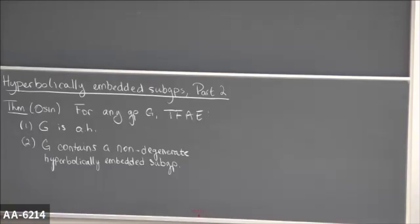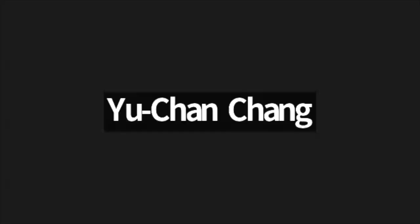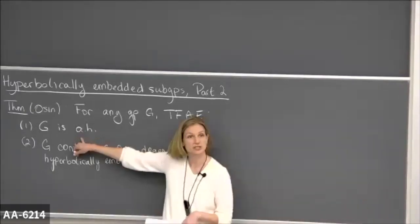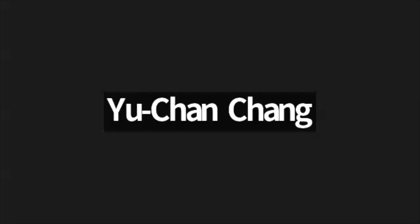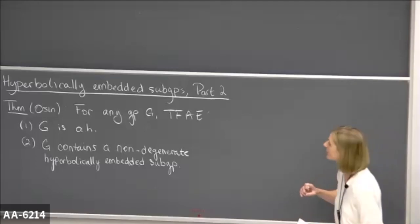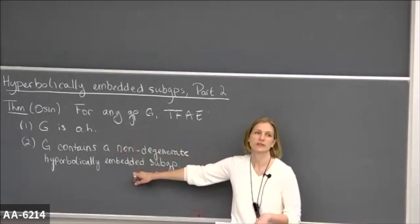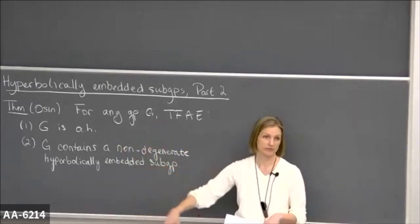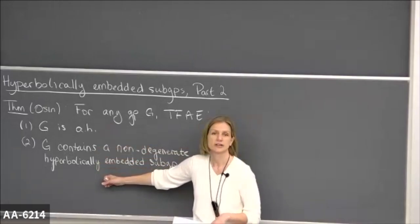Thanks for coming back. I'm going to keep talking about hyperbolic embedded subgroups today. The main goal is to talk about this theorem, which I mentioned yesterday. Yesterday we defined acylindrically hyperbolic groups — that's what AH stands for, acylindrically hyperbolic — and we defined hyperbolically embedded subgroups. The reason I introduced both topics is they're actually equivalent. A group is acylindrically hyperbolic if and only if it contains a non-degenerate hyperbolically embedded subgroup. I want to talk about how you get both directions of this equivalence, starting with: if you know your group is acylindrically hyperbolic, how can you find a non-degenerate hyperbolically embedded subgroup?